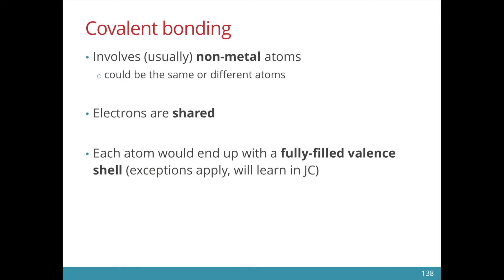Covalent bonding usually involves non-metal atoms. A covalent bond can be formed between two of the same or different atoms. When the covalent bond is formed, electrons are shared. At the end, each atom will end up with a fully filled valence shell, or what we call the stable electronic configuration of a noble gas.